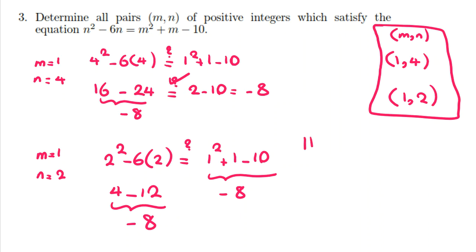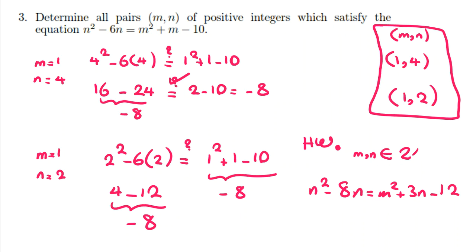As homework, try to solve this problem where M and N are integers: N squared minus 8N equals M squared plus 3N minus 12. You can comment your answers below this video. If you want to learn other important ideas, send a message to my WhatsApp number in the description. Please don't forget to subscribe, hit the notification bell, and like the video. Thanks, bye!